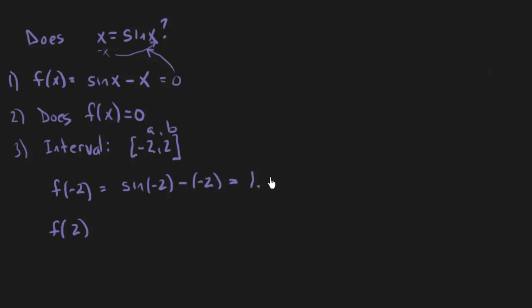And this gives me roughly a y value of 1.09 and a bunch of stuff. And then I'm going to plug in two. And this is actually going to give me minus 1.09 and a bunch of stuff. So we can say since f of negative two is positive, greater than zero, and f of two is less than zero,